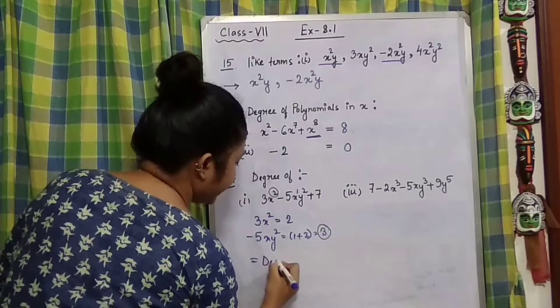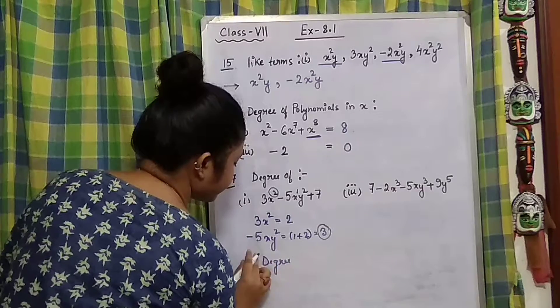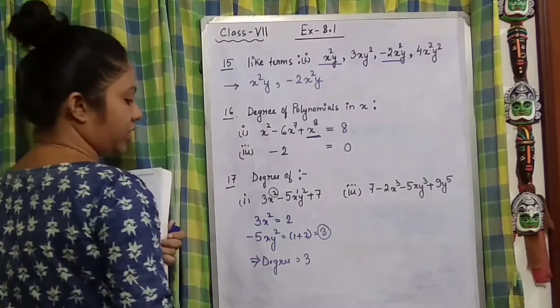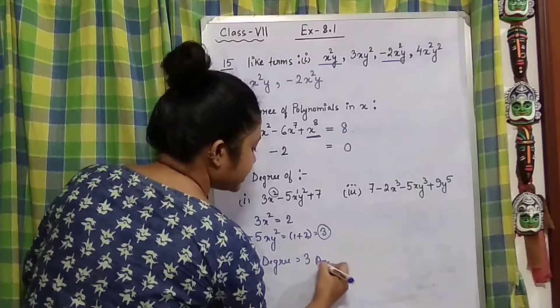So here, the degree will be 3. Alright? This is how we find it.